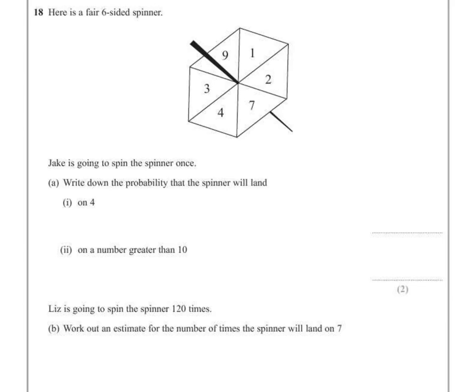Well, there is only one number 4 and there are 6 fair parts, so he's got a 1 over 6 chance. A 1 out of 6 probability that it will land on a 4.